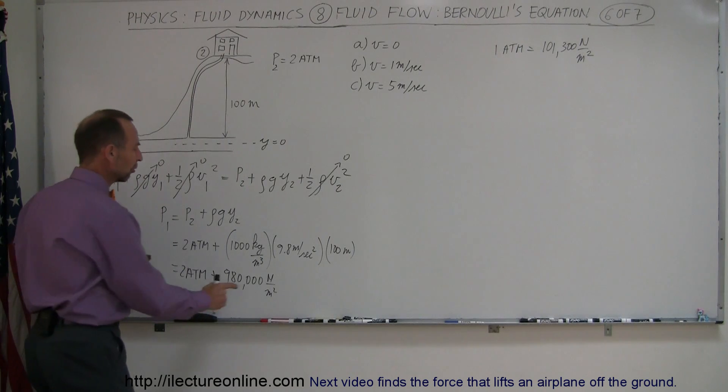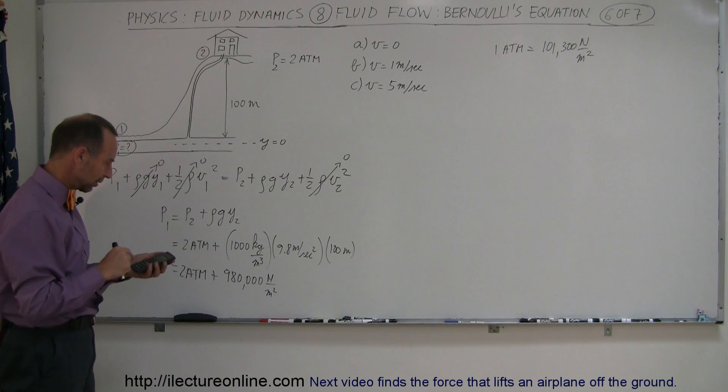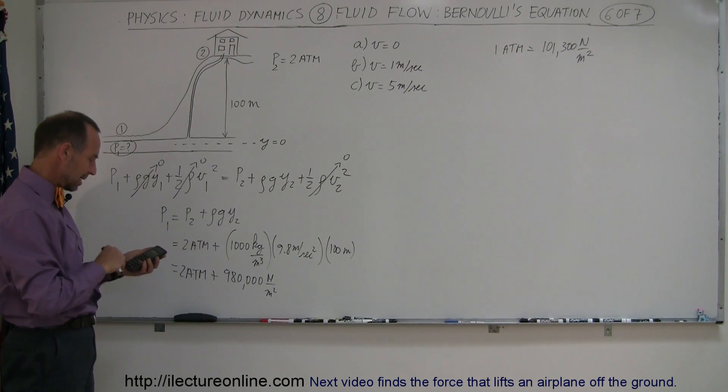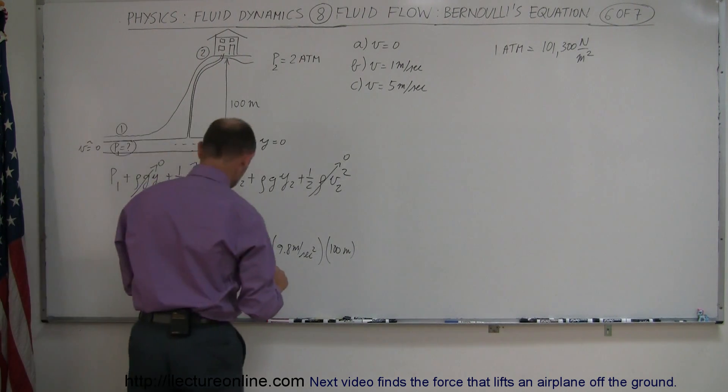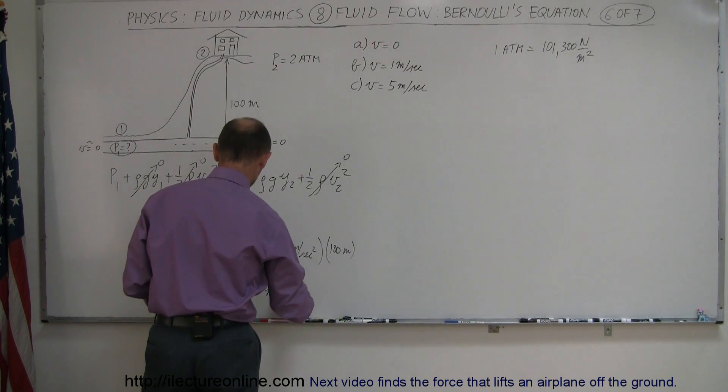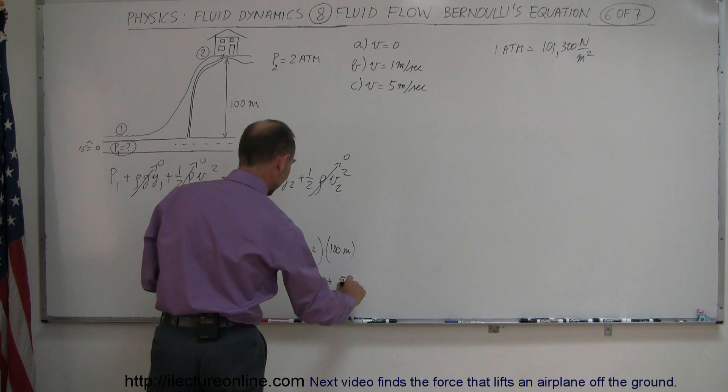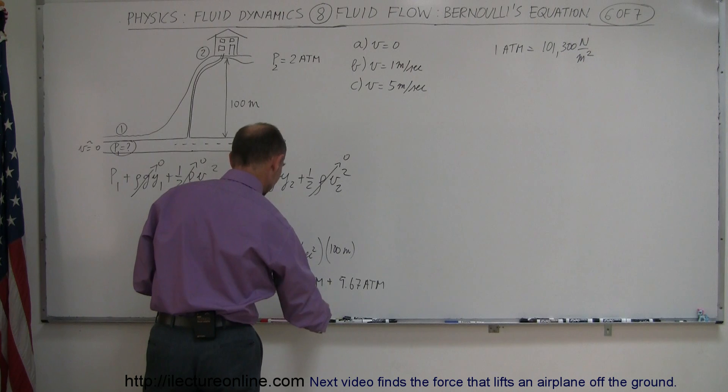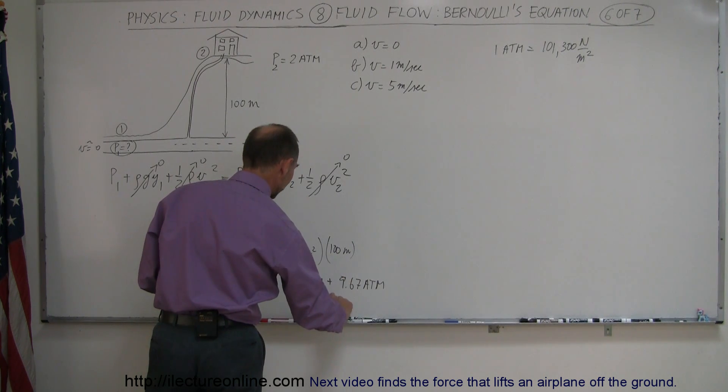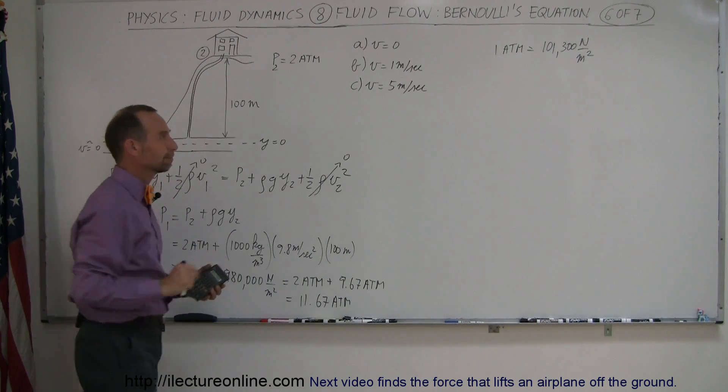So we're going to take this number here, divide it by 101,300 to convert atmosphere. So we have 980,000 divided by 101,300 equals, and so it'd be 9.67, yeah, 9.67 atmospheres. So this is two atmospheres, plus 9.67 atmospheres. So if we combine that, that would be 11.67 atmospheres of pressure necessary to drive the water up there.